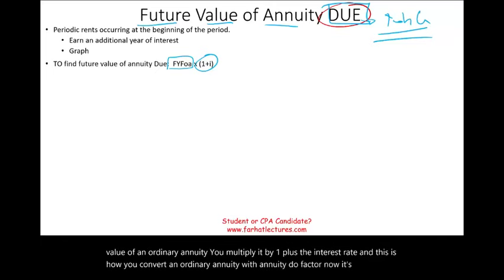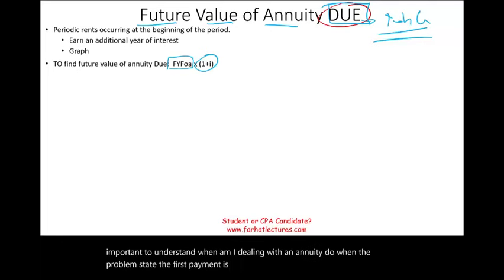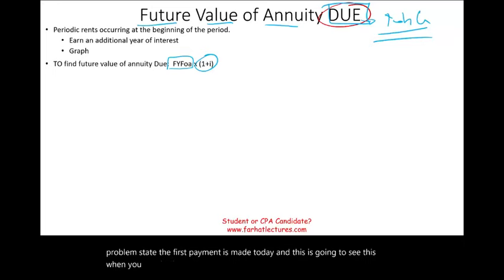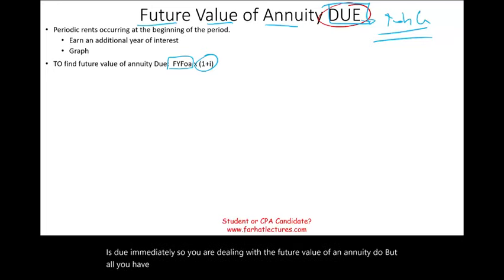It's very important to understand when you are dealing with an annuity due. When the problem states the first payment is made today — and you're going to see this when dealing with leases — the first payment is due immediately, so you are dealing with the future value of an annuity due. For now, understand what the future value of an annuity due is; later on, you will apply it.